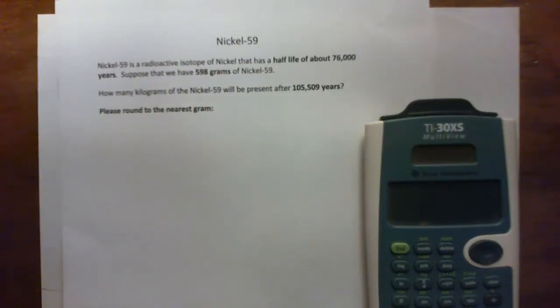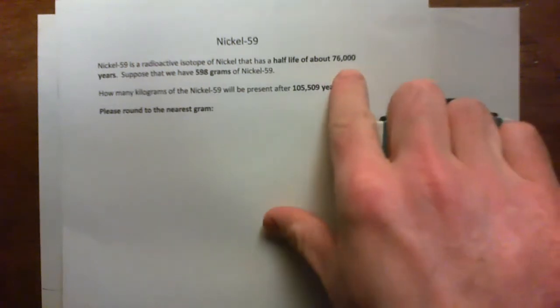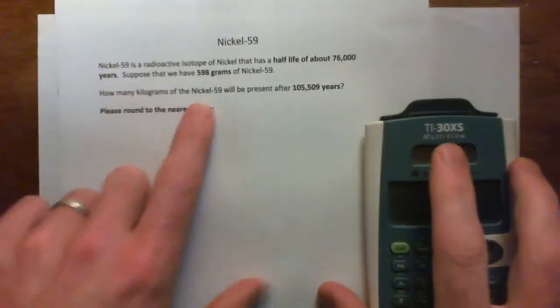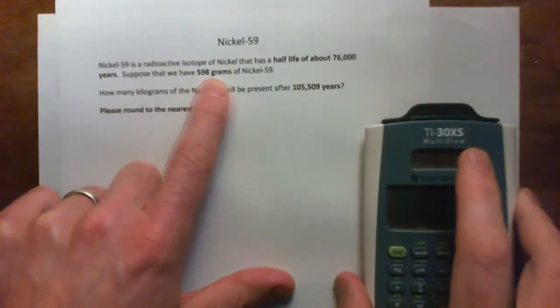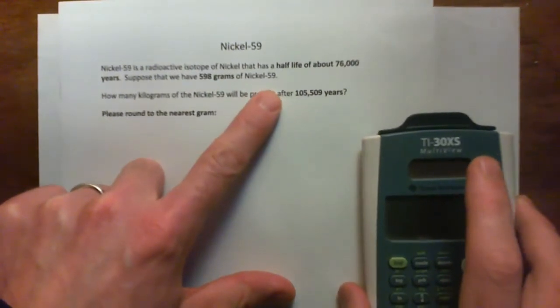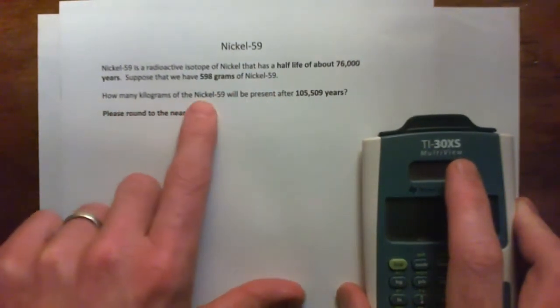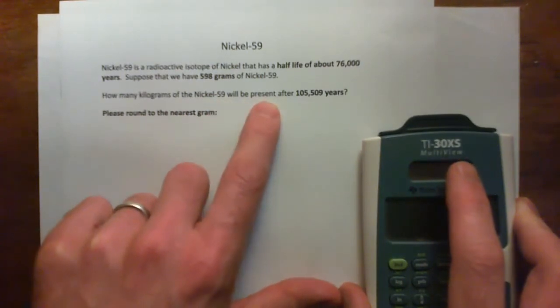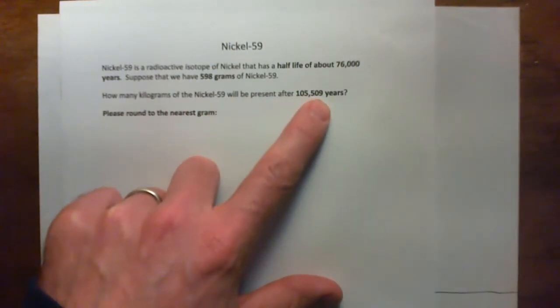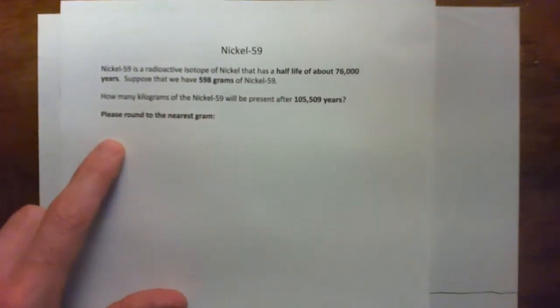Okay, in this video we're going to look at the radioactive substance isotope of nickel. It has a half-life of about 76,000 years, and we're starting with 598 grams of nickel-59. And we've got to figure out how many kilograms of this substance will be present after this many years, and round to the nearest gram.